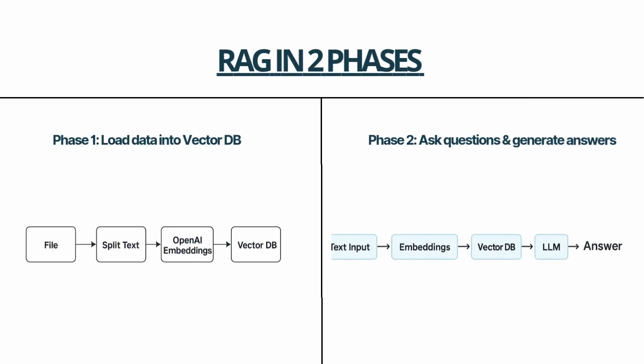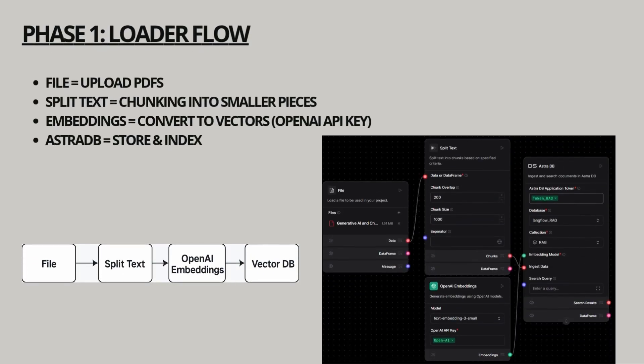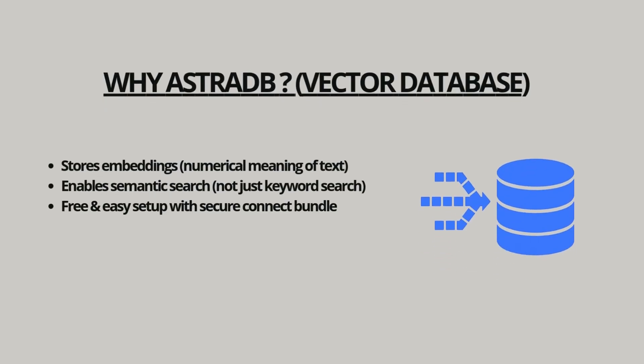RAG works in two phases. Phase one is all about loading data into the system, and phase two is about asking questions and retrieving answers. The uploaded documents need to be stored somewhere where they can be searched efficiently. For this, I'm using AstraDB, which is a managed vector database. A vector database is different from a normal database — instead of just storing text, it stores embeddings, which are numerical representations of text. These embeddings capture meaning and context, so the system can find semantically similar passages even if the exact words don't match your query. This is what allows you to ask natural questions and still get accurate results from your papers.